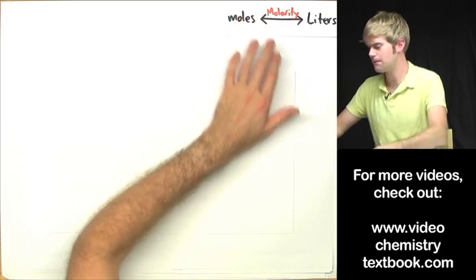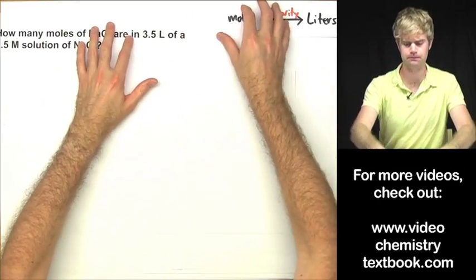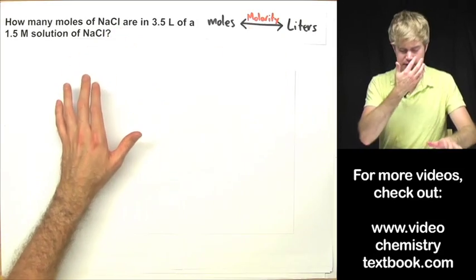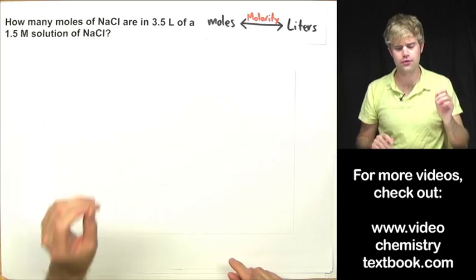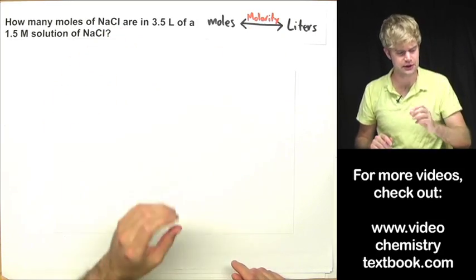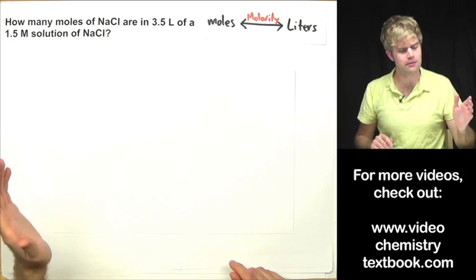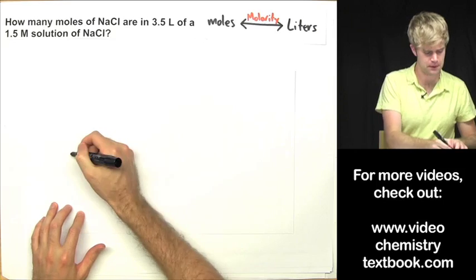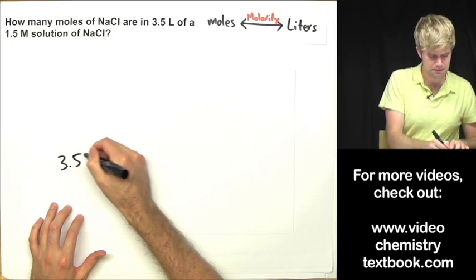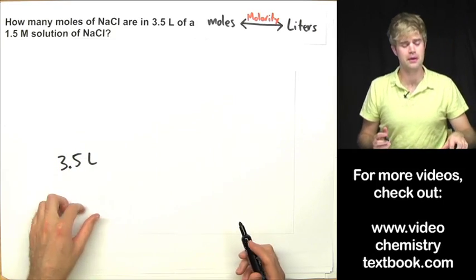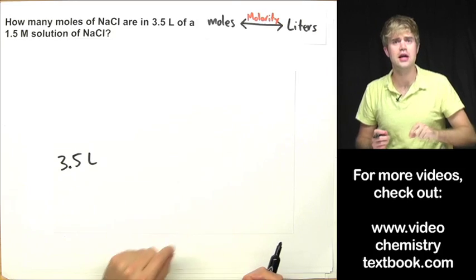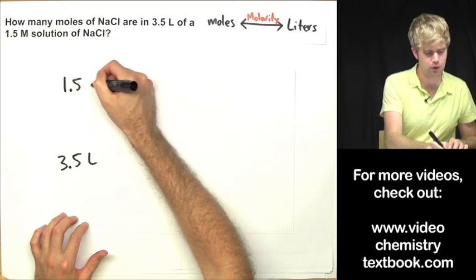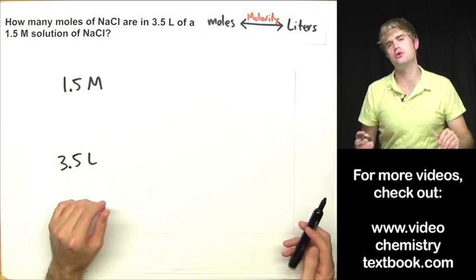Here is our first problem. It asks: how many moles of NaCl — sodium chloride — are in 3.5 liters of a 1.5 molar solution of sodium chloride? We've got 3.5 liters of the solution and we want to convert this into moles. We're going to need to use the molarity, 1.5 molar, as a conversion factor.